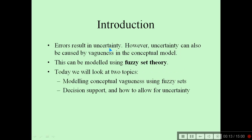Uncertainty and decision support. Errors actually result in certain uncertainty. However, uncertainty can also be caused by vagueness in the conceptual model. This can be modeled using our theory which we call fuzzy set theory. We'll look at modeling conceptual vagueness using fuzzy sets, and then decision support and how to allow for uncertainty.